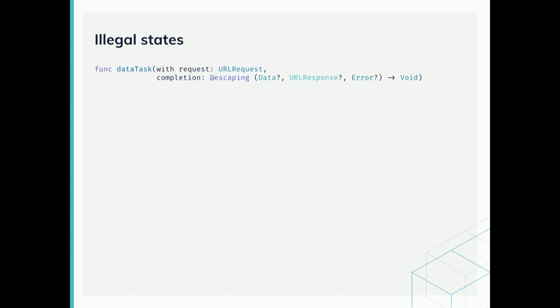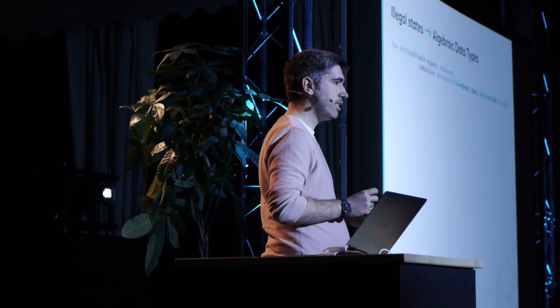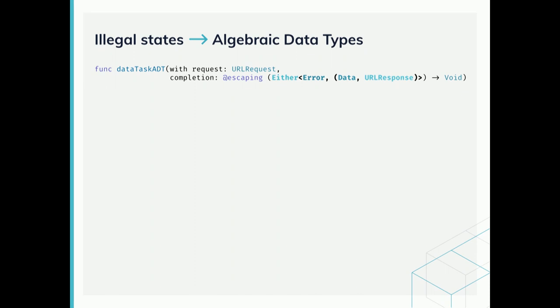The callback that we need to pass to DataTask has three optional parameters: data, URL response, and error. What this type means is that we can get any combination of values for these three parameters, ranging from receiving none of them to receiving all of them. But we know that some of these combinations are not valid and should never happen. We can make use of algebraic data types in order to make illegal states impossible to represent. We can model this situation with an Either type that models either having an error or a tuple with data and URL response — and these are the only two cases we will have to handle.